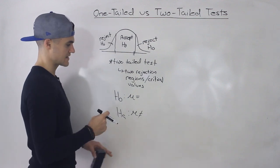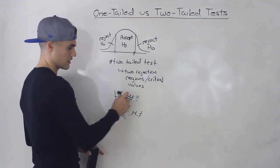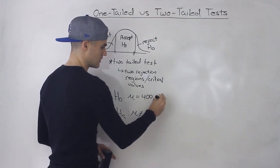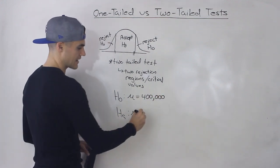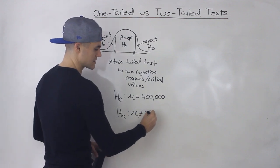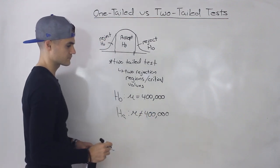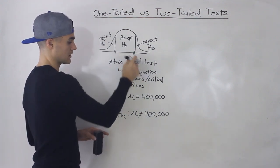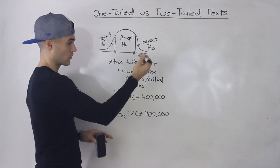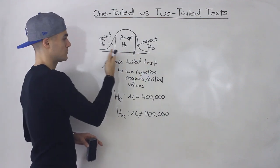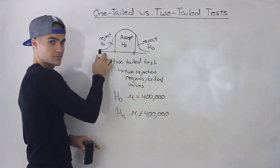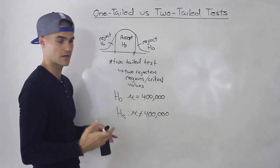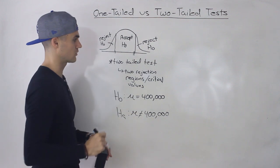If you remember, we did an example with houses where the average up until a certain point was $400,000. Someone came along and said they don't believe it's $400,000 anymore. So there were two possibilities — either it could be a lot greater than $400,000, you would reject the null, or it could be a lot less than $400,000, you reject the null. So there are two rejection regions, hence a two-tailed test with two critical values.